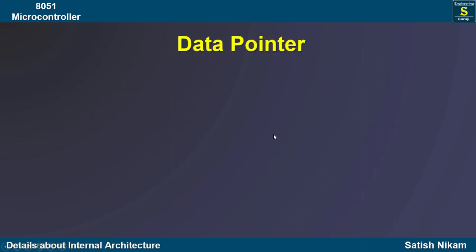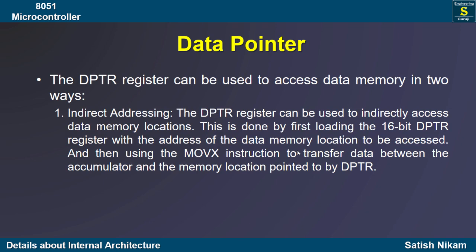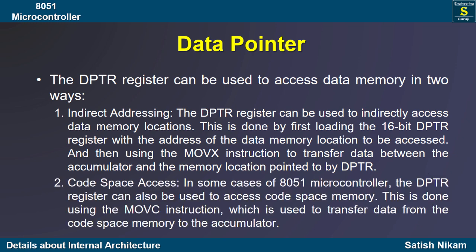The DPTR register can be used to access data memory in two ways. First, by loading the 16-bit DPTR register with the address of the data memory location to be accessed, and then using the MOVX instruction to transfer data between the accumulator and the memory location pointed to by DPTR. The DPTR register can also be used to access the code space memory, that is ROM, by using the MOVC instruction, which transports data from the code space to the accumulator. These two cases will be discussed in detail when we cover the instruction set.